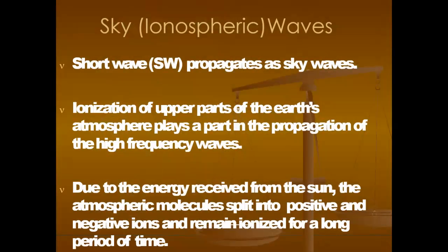Sky wave propagation or ionospheric propagation: below 30 MHz frequency, signals are transmitted via sky wave propagation. Short waves propagate as sky waves. Ionization of the upper parts of the Earth's atmosphere plays a part in the propagation of high-frequency waves. Due to energy received from the Sun, atmospheric molecules split into positive and negative ions and remain ionized for a long period of time.